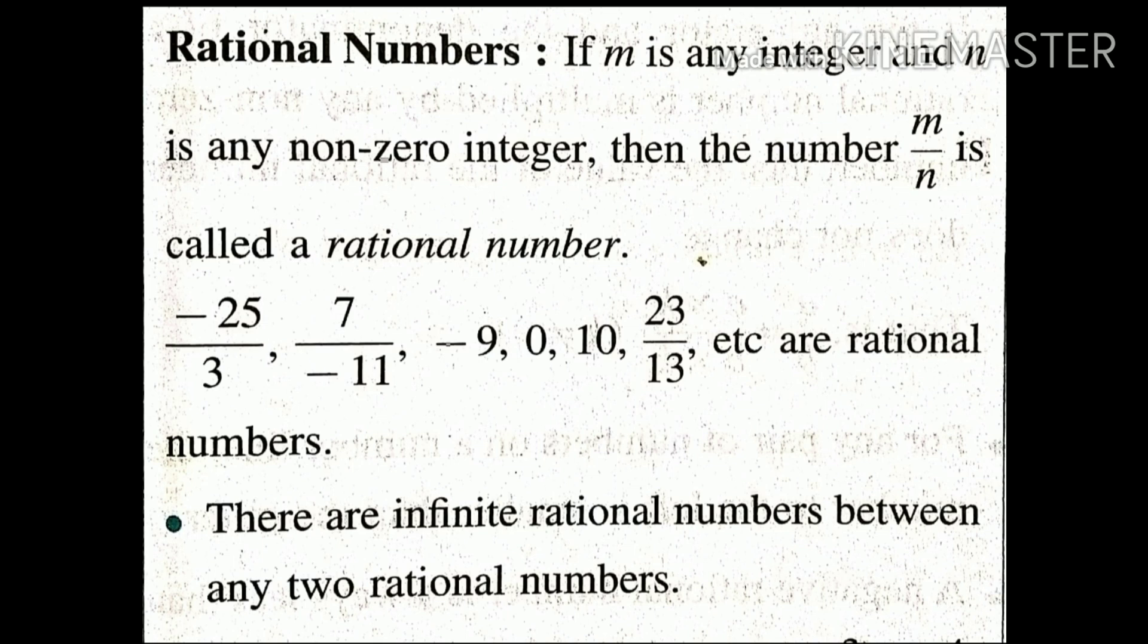If m is any integer and n is any non-zero integer, then the number m upon n is called a rational number.